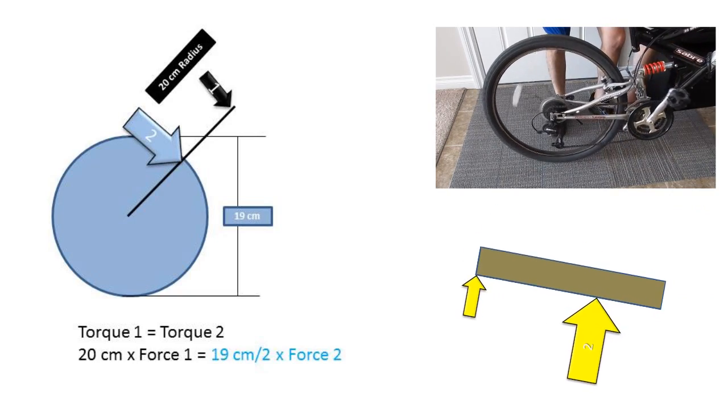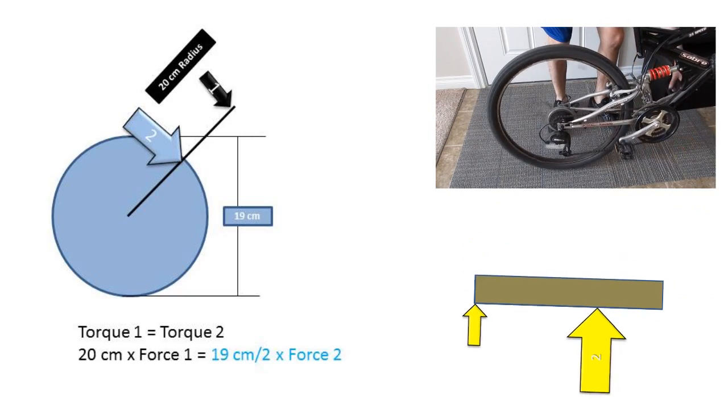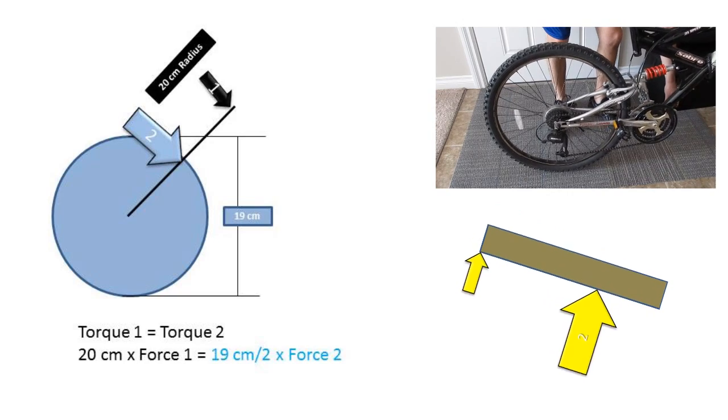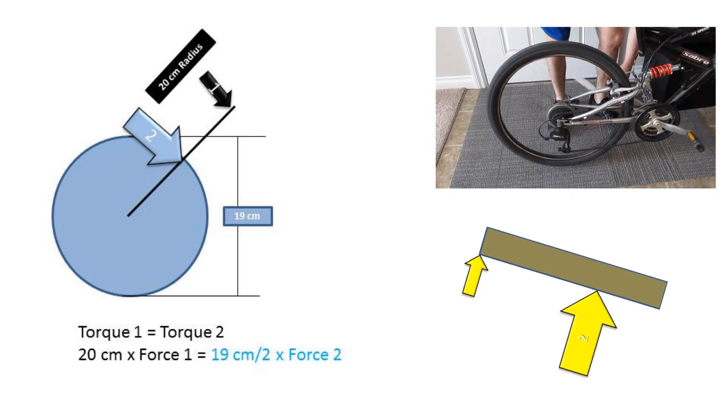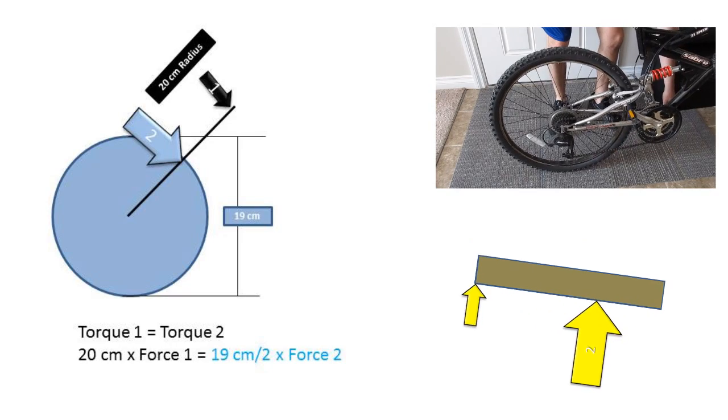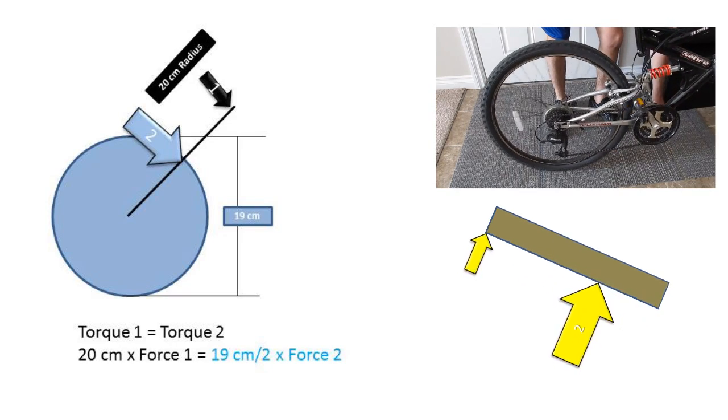Now if you were to attach a rope to the door at the point closer to the hinge and move the door at the side farthest from the hinge, the rope would have a greater force on it than you are applying to the door. This comes at the cost of having less displacement.